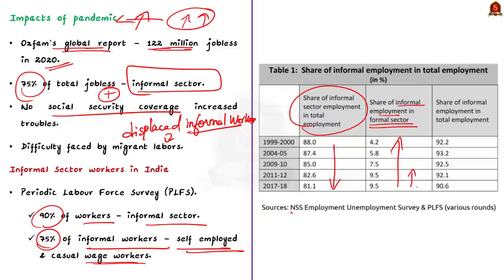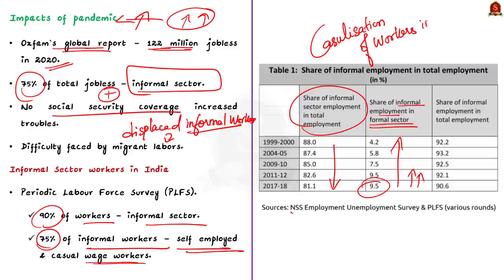If you go through the table, you can find that though the share of informal employment in total employment is decreasing, the share of informal employment in the formal sector is increasing. This is really worrying. This is due to the casualization of the workforce in the formal sector. We will discuss this aspect — casualization of workforce in the formal sector — in detail in later discussion.